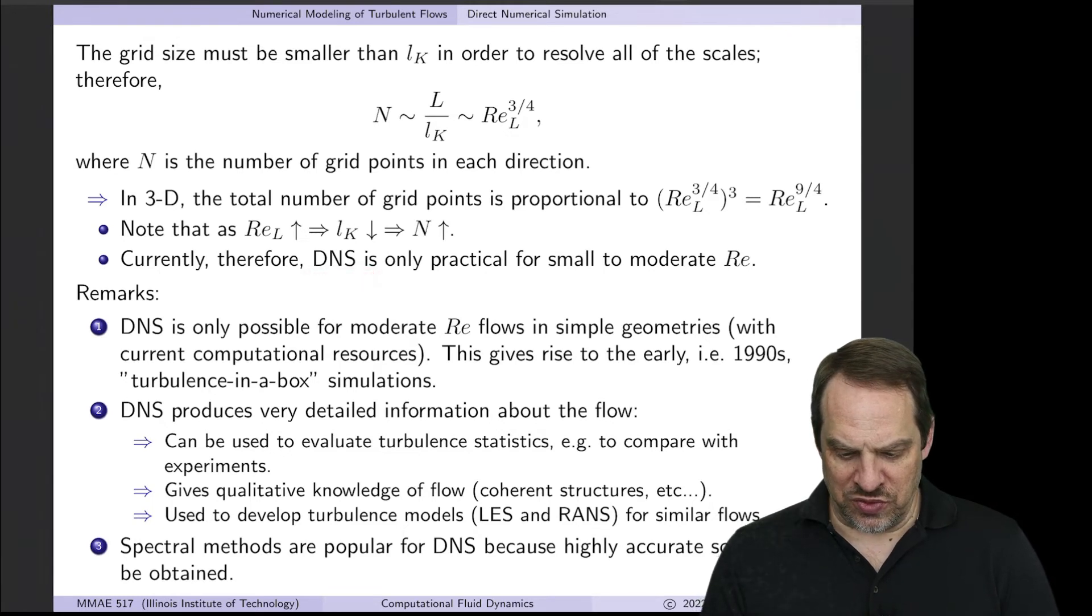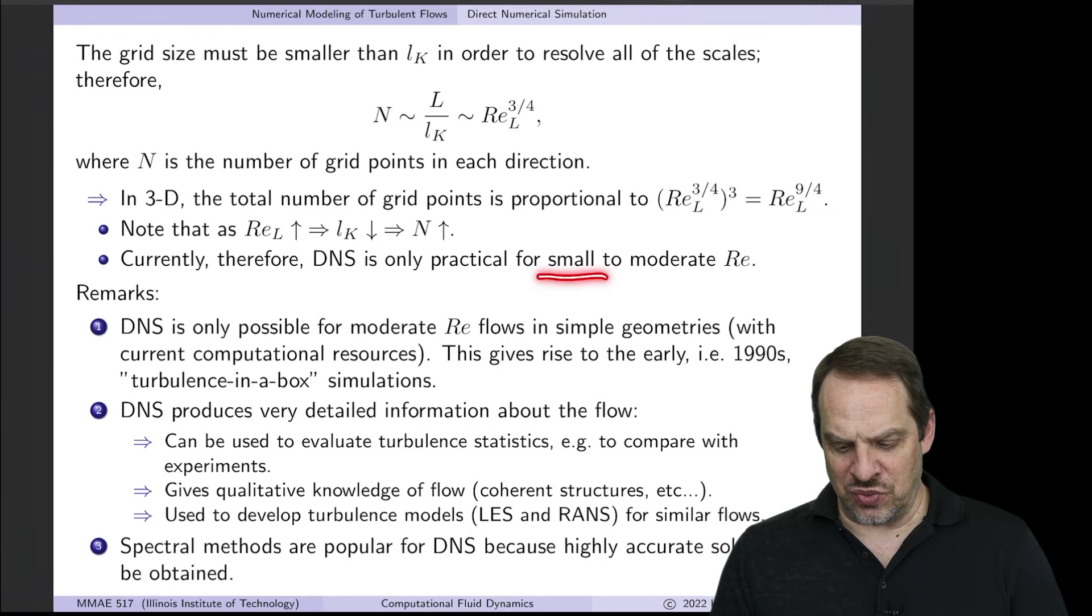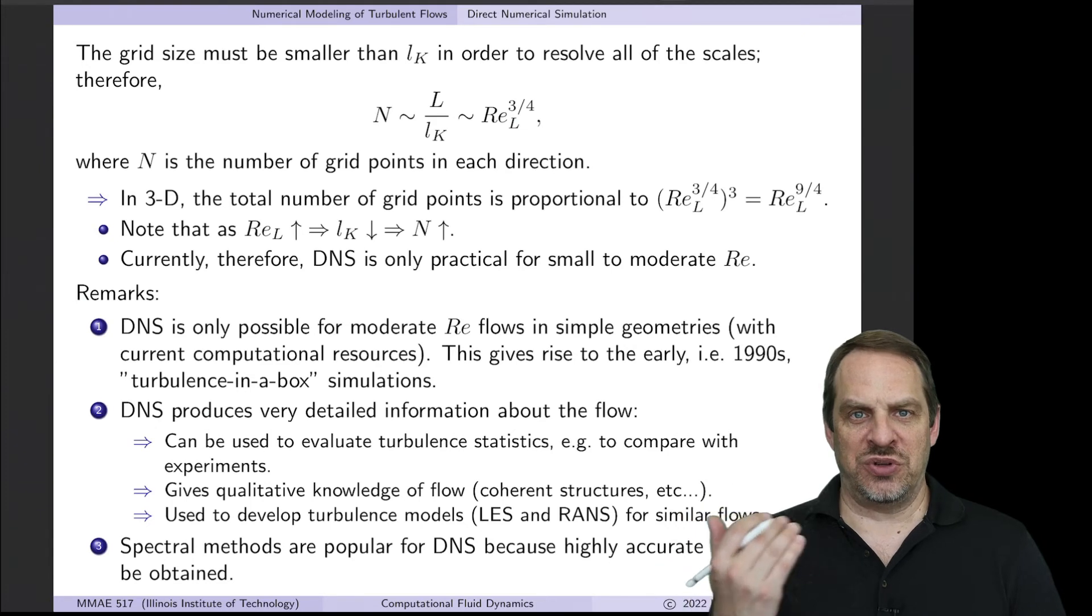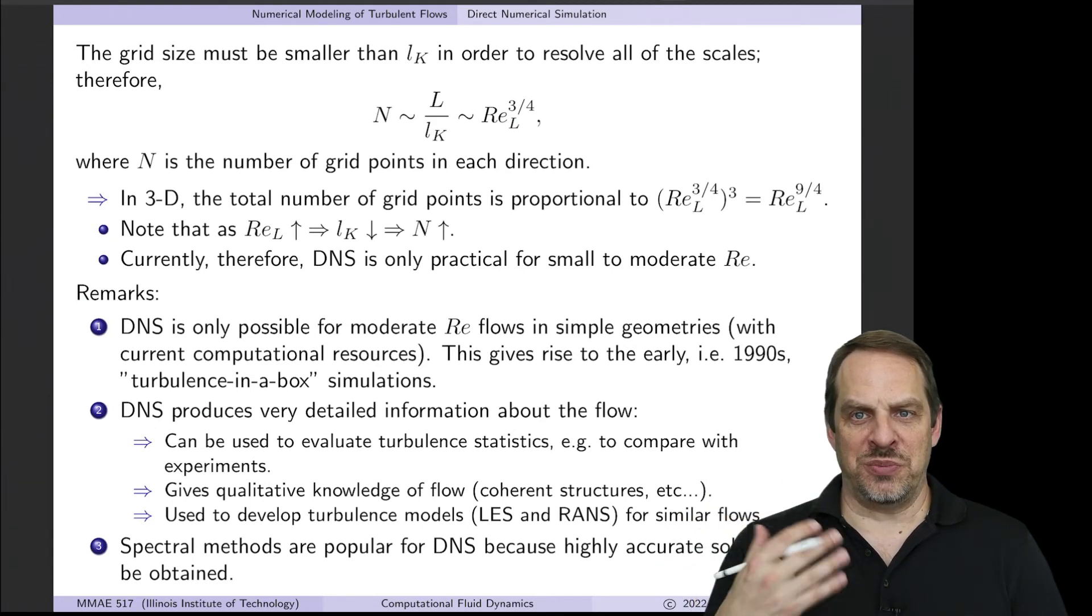So currently, DNS is only practical for small to moderate Reynolds numbers. Now, I intentionally use relative adjectives here, small and moderate, because over time, as computers get bigger and faster, the definitions of what we mean by small and moderate will change.